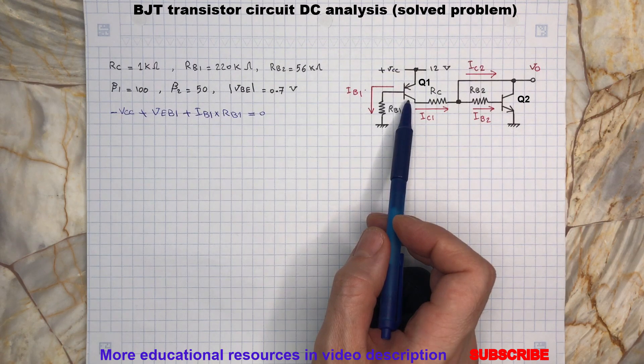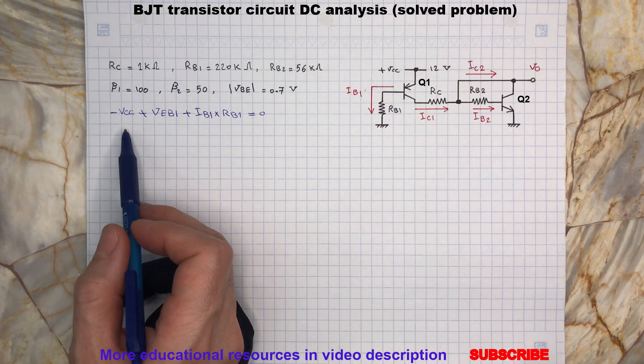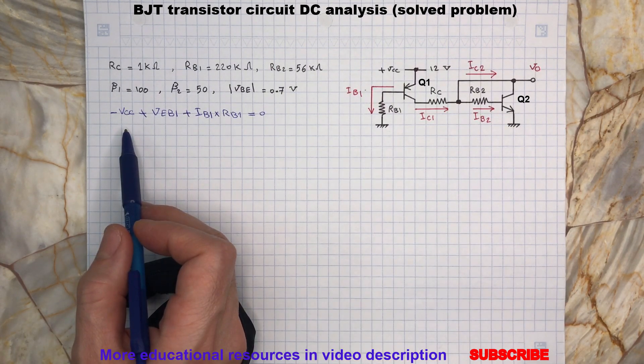Remember Q1 is a PNP transistor which its emitter should have a higher potential with respect to the base. Now by rearranging this equation we will have the following.